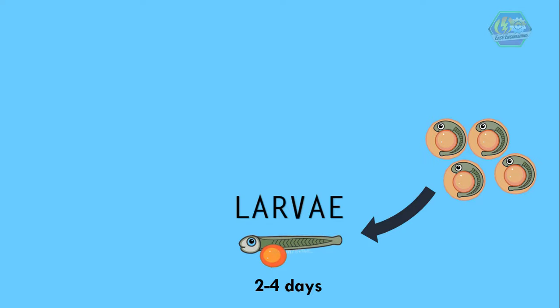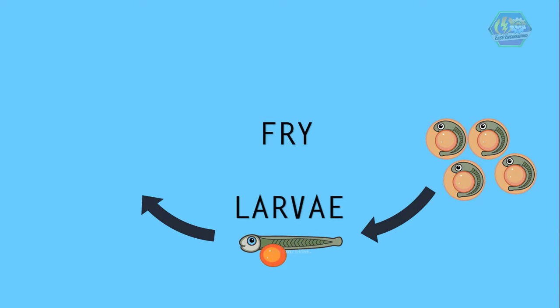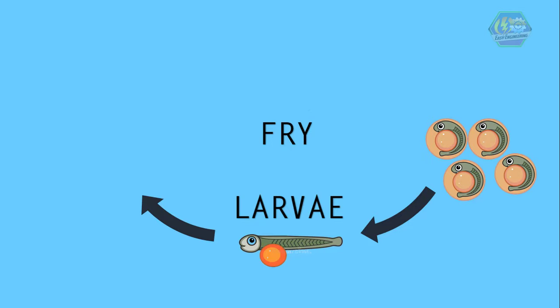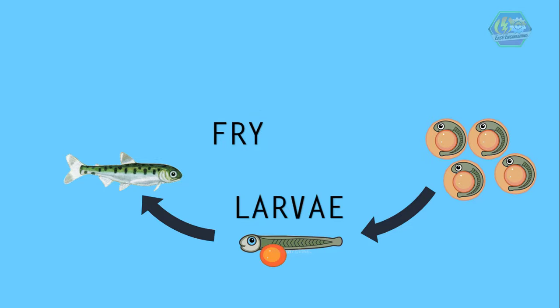Next is the fry. When you think of fry you might imagine frying a fish or chicken, but this is not the case — these are simply young fishes. Once the yolk sac is fully consumed, they are ready to start eating on their own. They are usually called fry during the first few months.